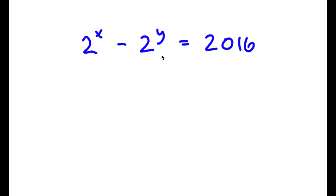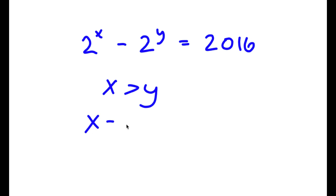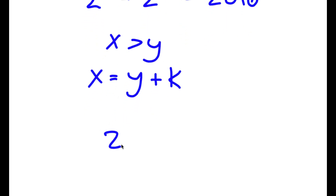In this problem, I have 2 to the power of x minus 2 to the power of y is equal to 2,016. Just at first glance, I can already tell that x is greater than y because if x were less than y, this would result in a negative number. But since it results in a positive number, x is going to be greater than y. So this means we can say that x is equal to y plus some constant k. If I replace x with y plus k, I get 2 to the power of y plus k minus 2 to the power of y is equal to 2,016.